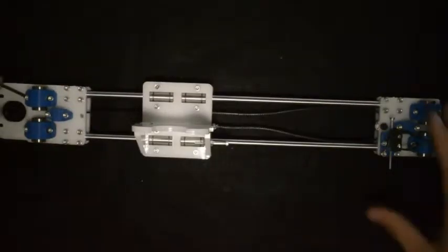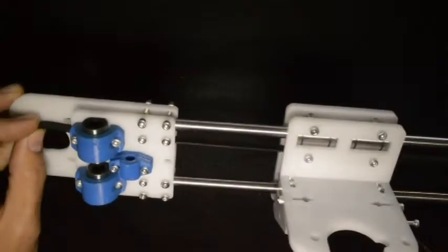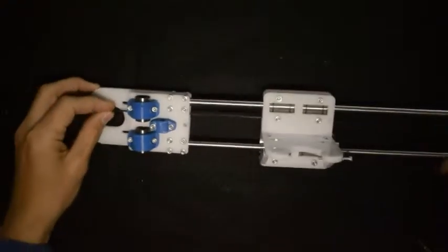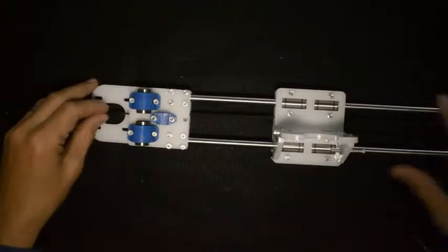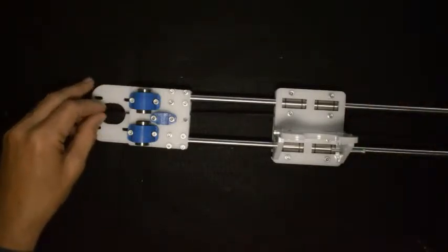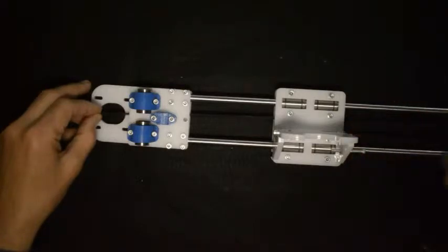When you've done that, the assembly will look like this. And if you pull on the end of the GT2 belt, the X-carriage will move. Make sure that the belt can move freely and is not obstructed by any screws.